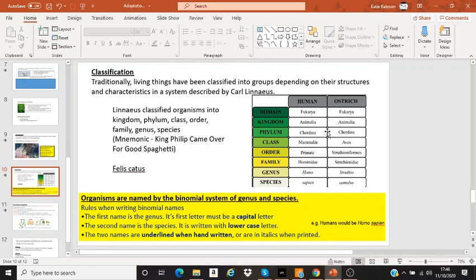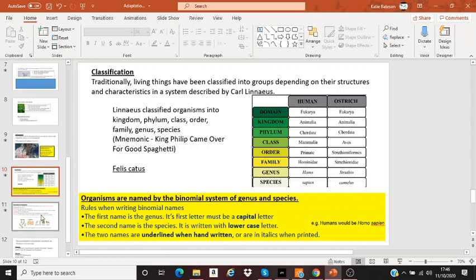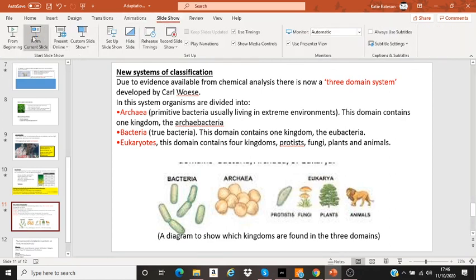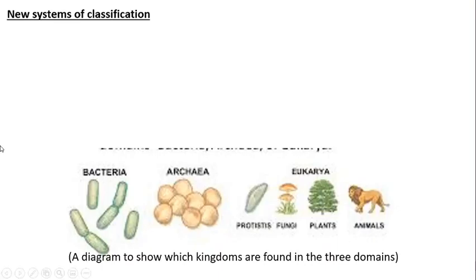But we share the same phylum. But if I were to compare humans and chimpanzees, they'd have the same phylum, the same class, and the same order. The more similarities two species have in their classification, the more recent their common ancestor is from evolution. The reason we know all this is because evolution has been applied to the classification.